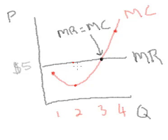At unit two, your revenue is here, what you receive, but your cost is down here, you're making money. Where marginal revenue equals marginal cost is right here.